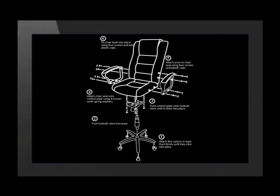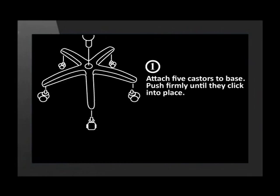This is the assembly diagram that can be used to assemble an office chair. The assembly diagram includes instructions and pictures. Instruction 1 shows us the parts we need to use and gives the instruction: attach five casters to base. Push firmly until they click into place.